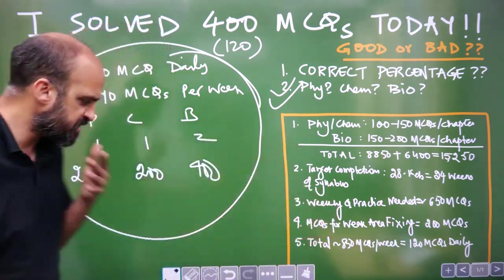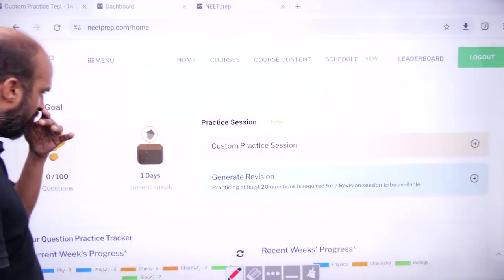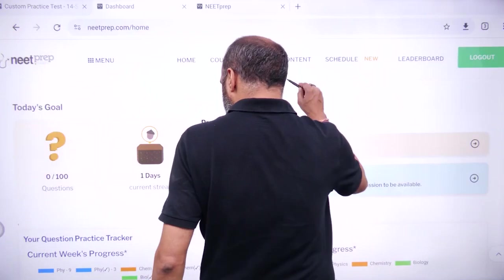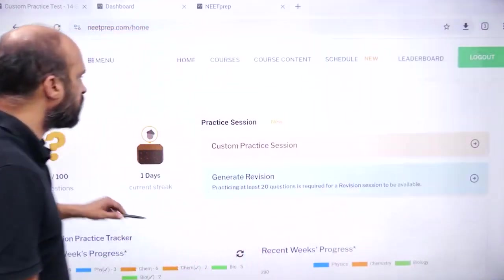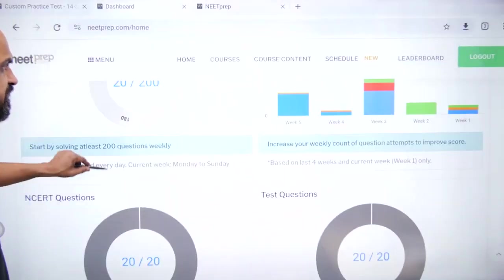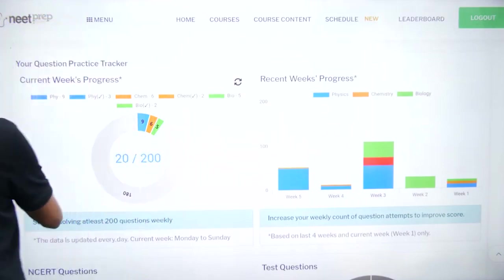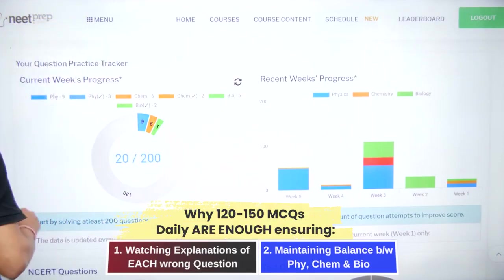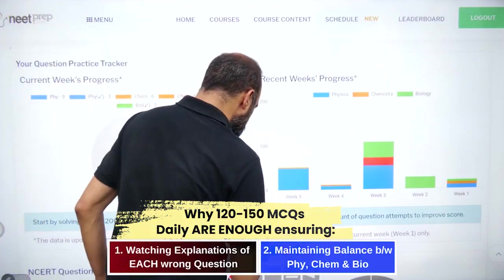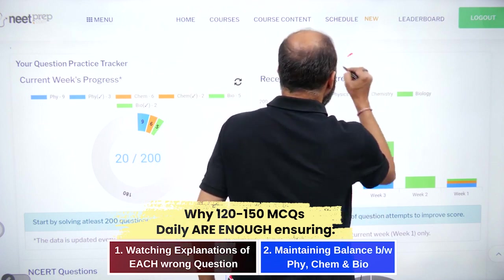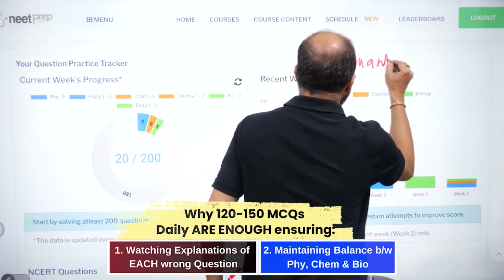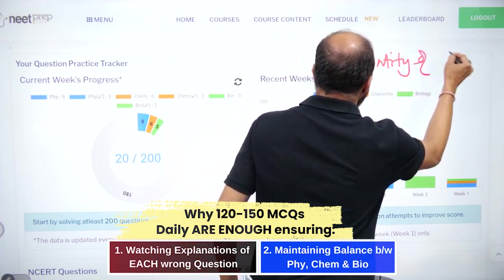But you have to make sure that you are practicing properly. You are maintaining balance between physics, chemistry and biology. Let me show you how you will see this correct percentage in target batch. So, if you come to neetprep.com at home, what you will see are these two graphics. I will tell you what these two graphics are. One graphic is quantity of questions. Number of questions practice.